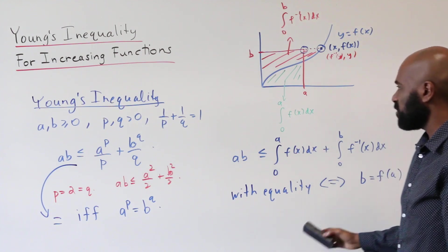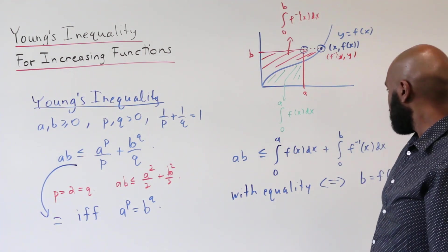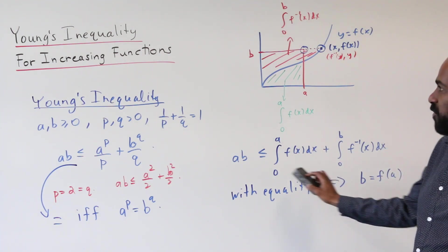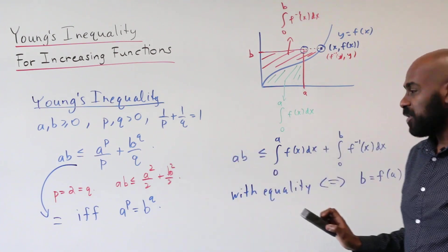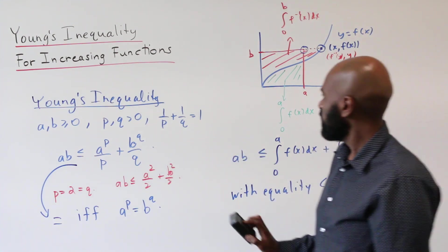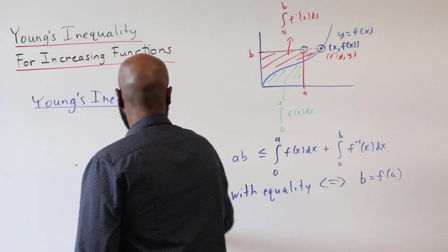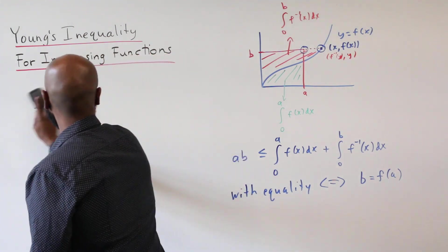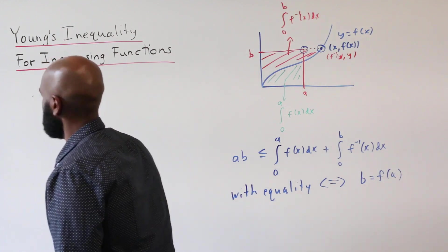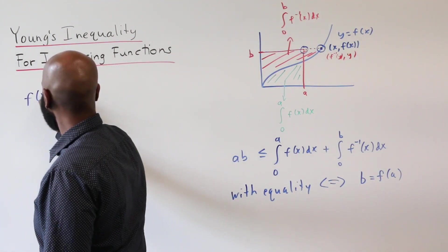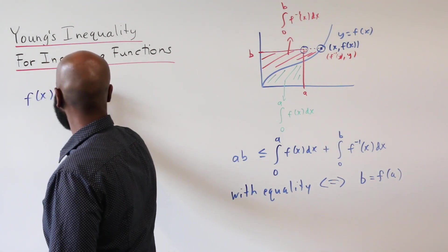So let's see what consequences we can get from this. In fact, we'll see how we can recover Young's inequality in the two-variable case from this. So what we'll do is consider a particular function f of x and apply it to this. So we'll consider f of x equal to x to the p minus 1.